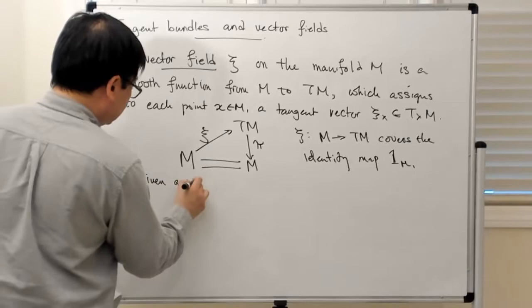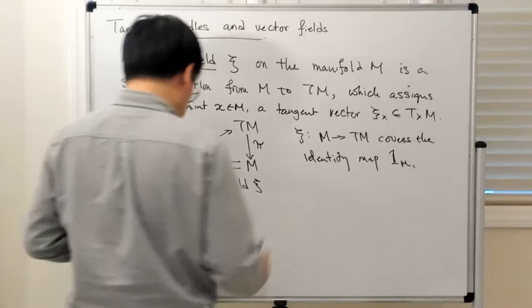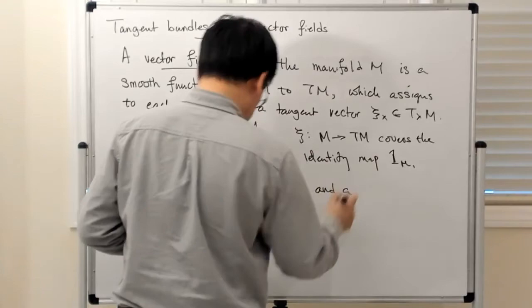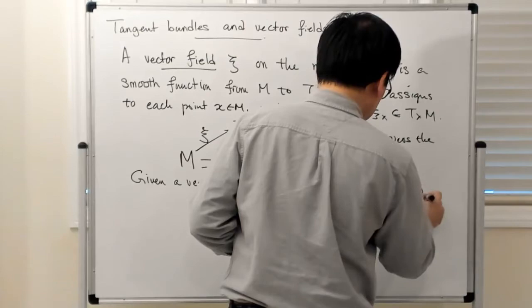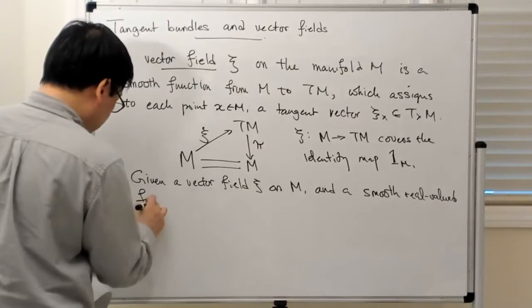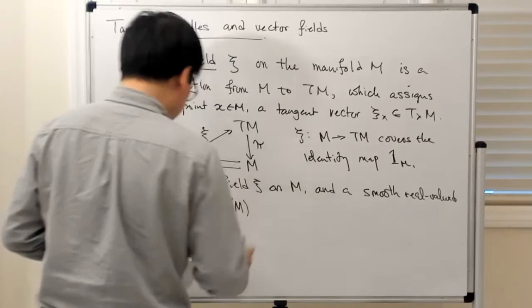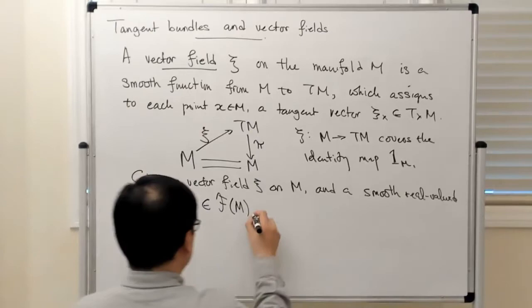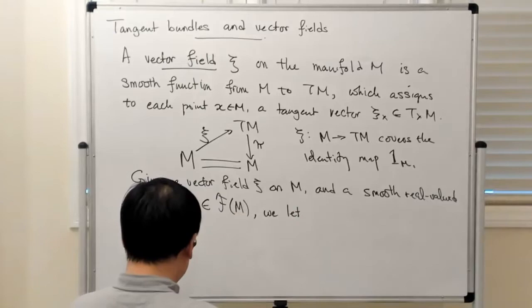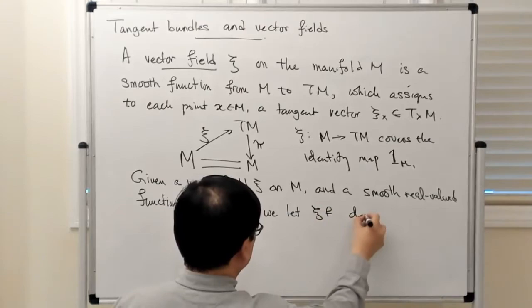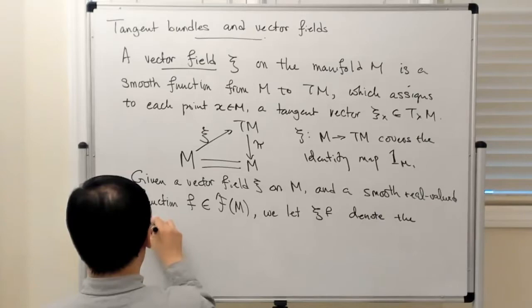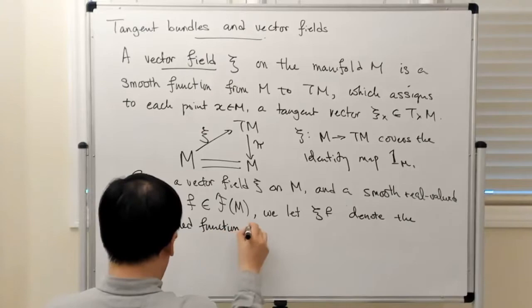Given a vector field C on M and a smooth real-valued function F — from this set of smooth real-valued functions on M — we let CF denote the real-valued function on M defined as follows.